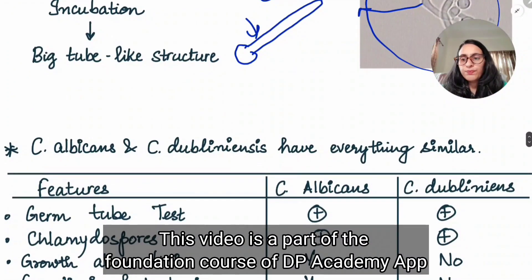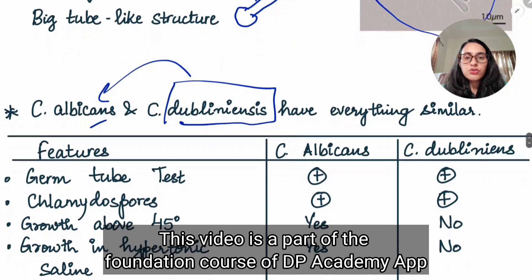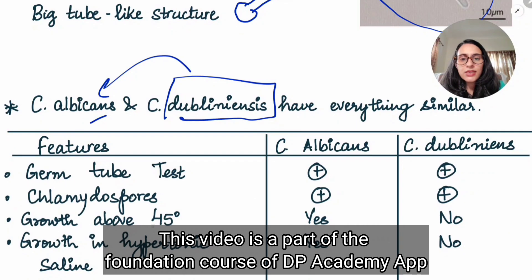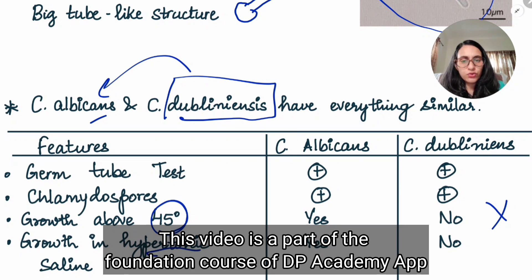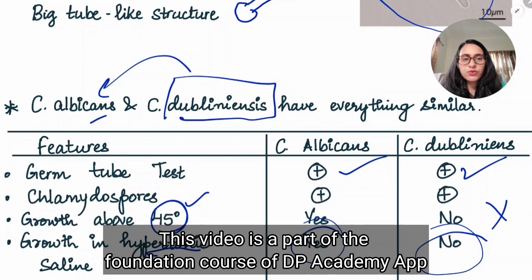Candida albicans and dubliniensis — dubliniensis is the copy double of Candida albicans. The differentiating features: Candida albicans is tough and survives everything — for example, Candida albicans shows growth above 45 degrees Celsius while dubliniensis does not show growth above 45. Candida albicans also shows growth in hypertonic conditions while dubliniensis does not. However, similar features between both include: germ tube test is positive in both, pseudo hyphae are seen in both, and chlamydospores are seen in both.